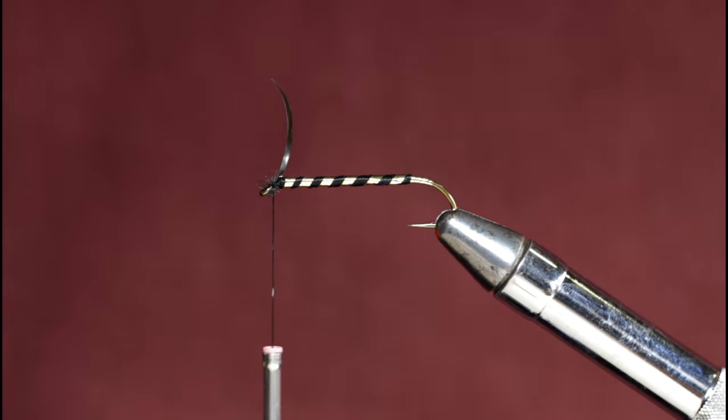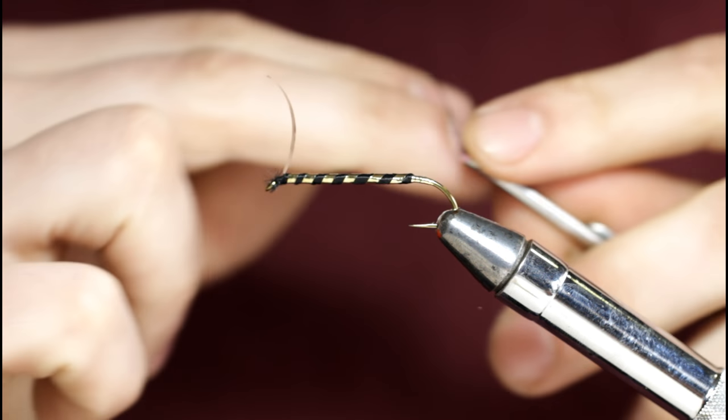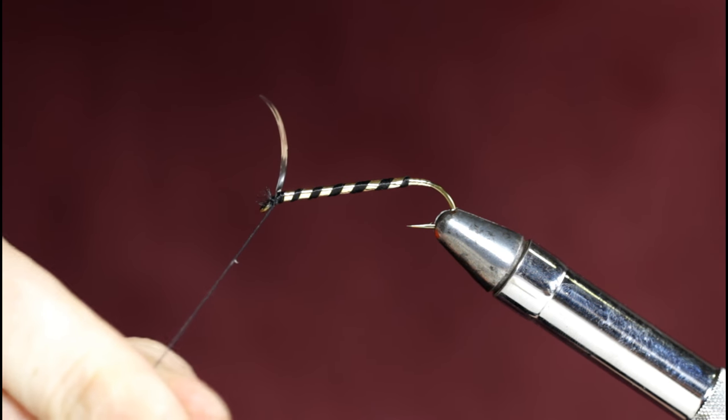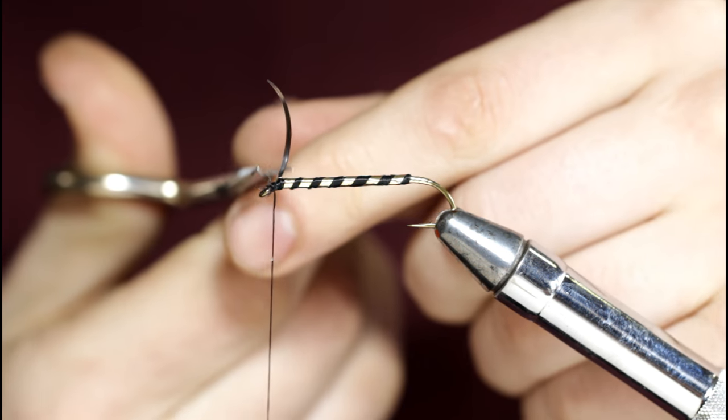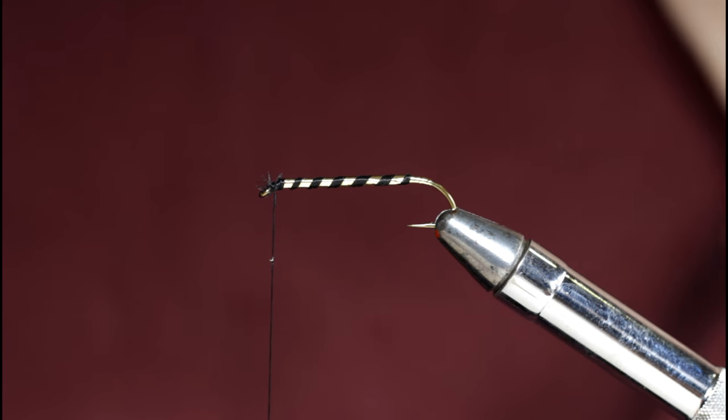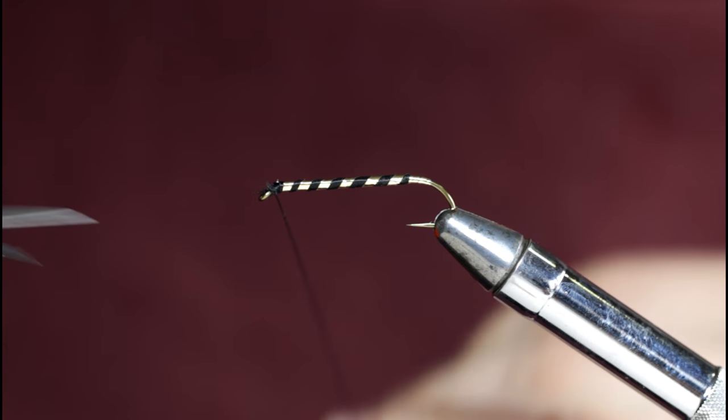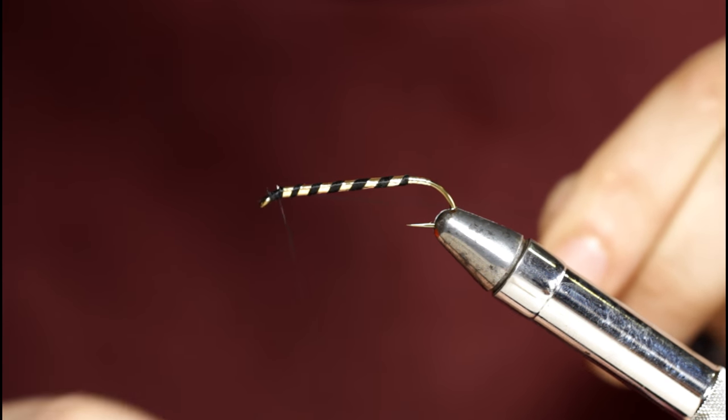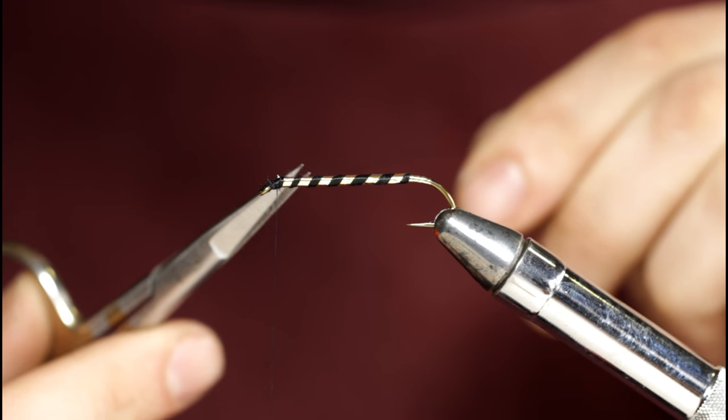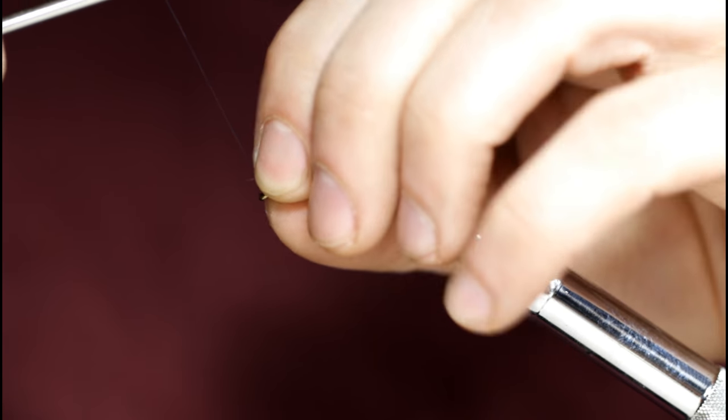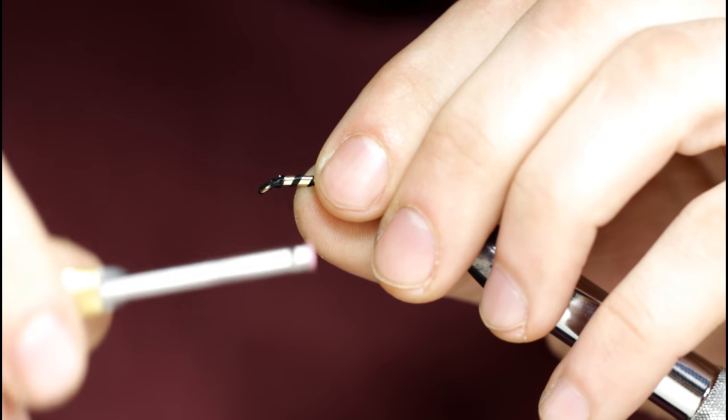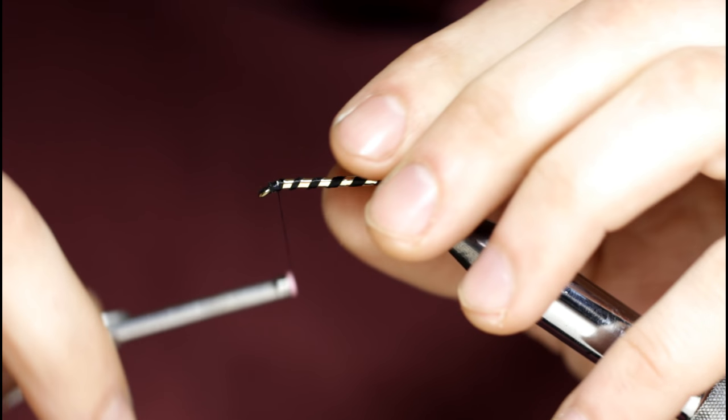Now I'm going to throw a few half hitches in here, snip off this tag end of tinsel. I'll come in with some scissors and snip this off because I'm going to start some 70 denier black thread. This thread is much smaller, it's just going to help me build up a nice even head without adding too much bulk.